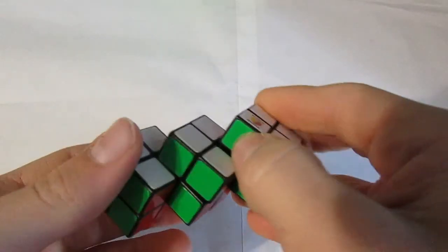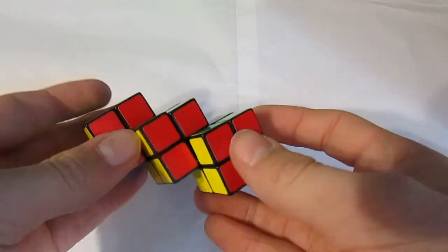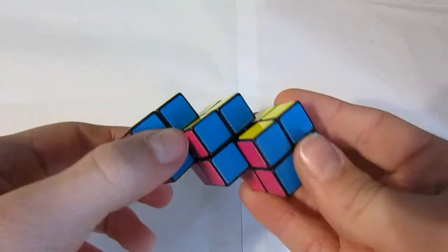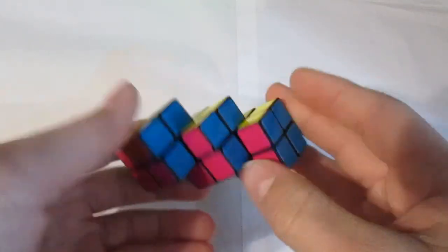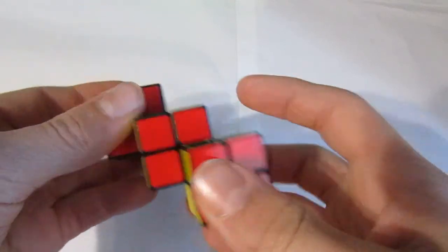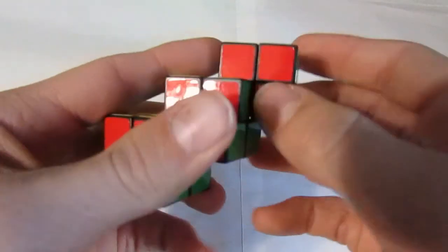So first up is this fused 2x2 cube, and it's fused three times, which I find really fascinating, and I want to definitely see the mechanism. It turned well, it's just I fear that it'll pop because it's quite loose.